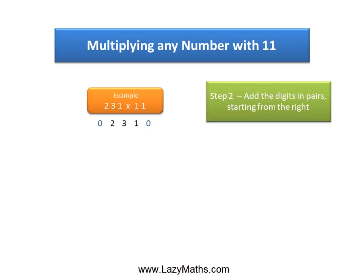The next step is to start adding digits in pairs starting from the right side. So our first pair is 1 and 0 from the right side. We take 1 plus 0 and we get 1.